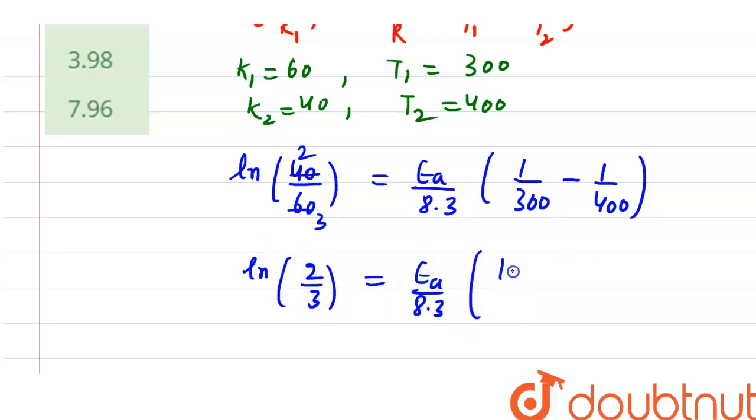which is equal to (Ea/8.3) × [(400 - 300)/(300 × 400)]